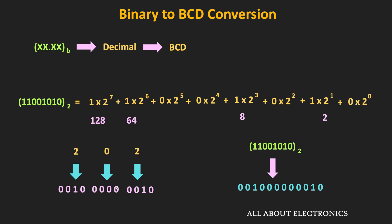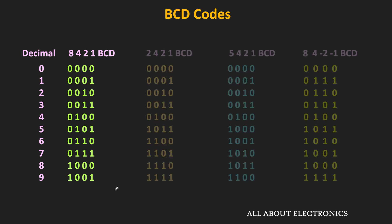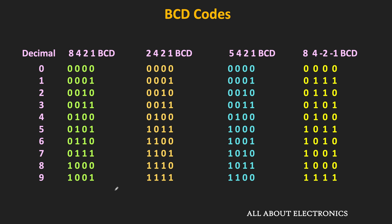So far we have only seen the most popular 8421 BCD code. But as I mentioned earlier, there are also other types of BCD codes like 2421, 5421, and 84-2-1. In the 2421 code, starting from the MSB, the weight of each digit is 2, 4, 2, and 1 respectively. Similarly, in the 5421 code, the weight of each digit is 5, 4, 2, and 1 respectively. This is how decimal digits 0 to 9 are represented in these different BCD codes. The 8421, 2421, and 5421 BCD codes are positive weighted codes because all their weights are positive. But the 84-2-1 BCD code is a negative weighted code because some of its weights are negative.